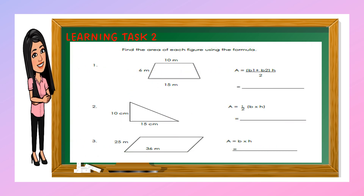For your learning task 2, follow the formula to find the area of these three figures. A trapezoid uses the formula: (B1 plus B2) times height divided by 2. For the triangle, we have one-half times base times height — so 10 times 15 divided by 2. For number three, we have base times height — 25 times 36.